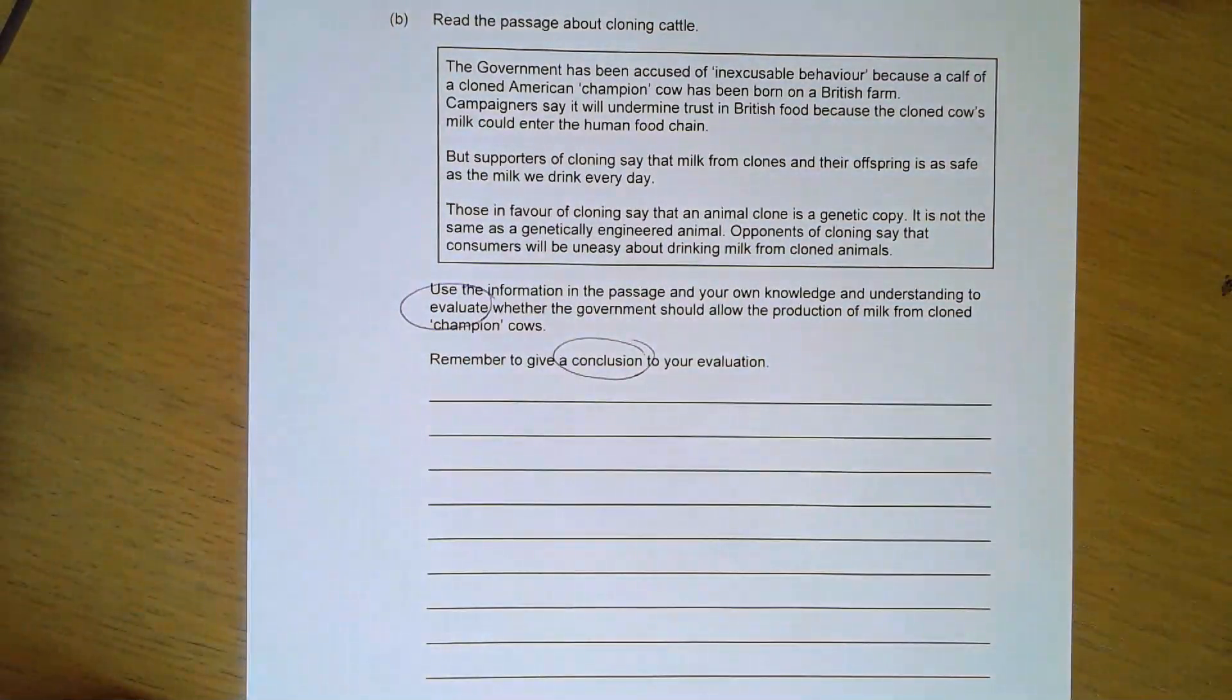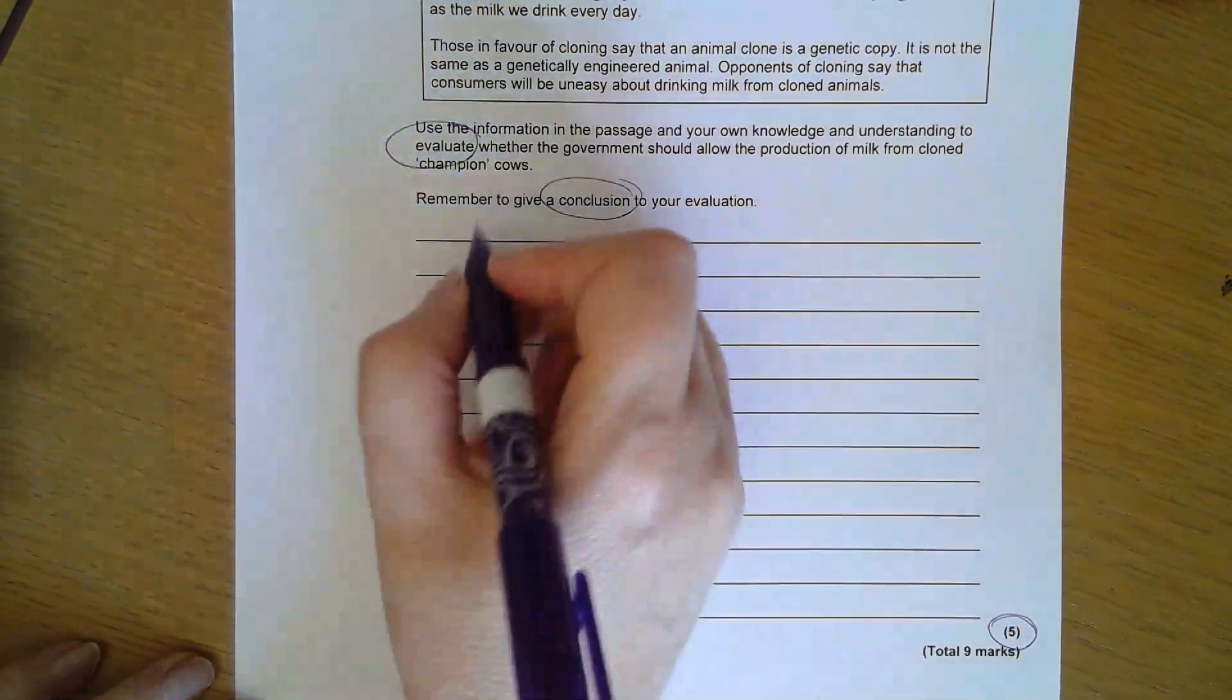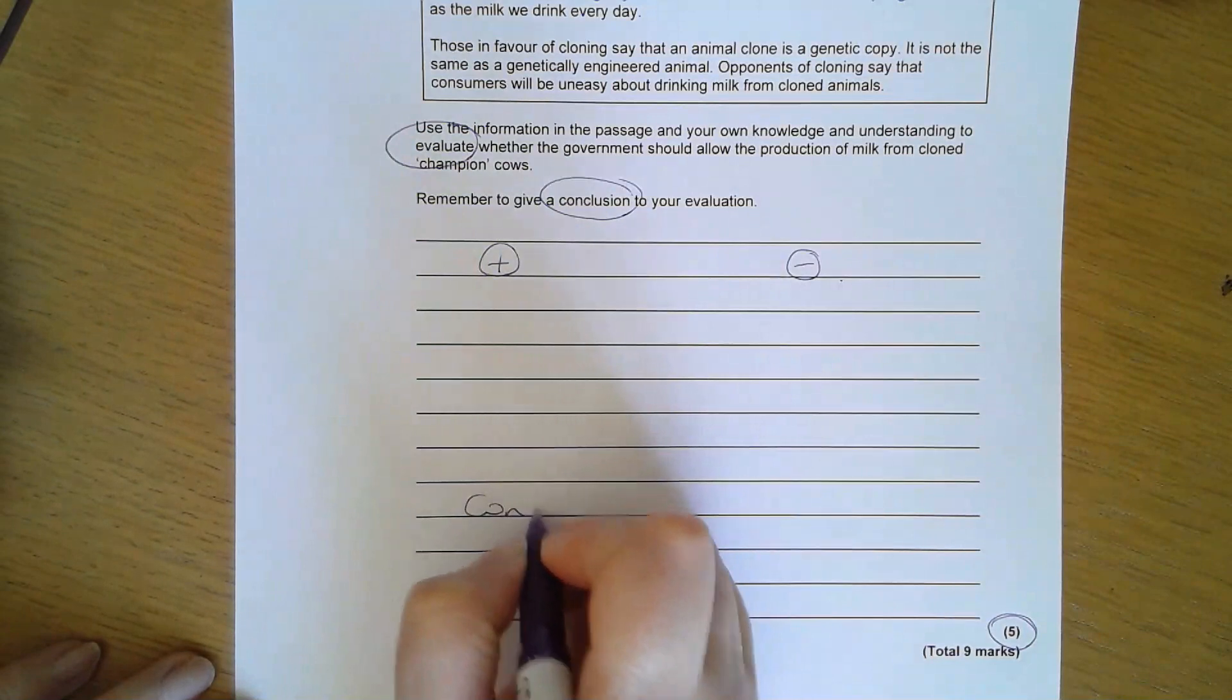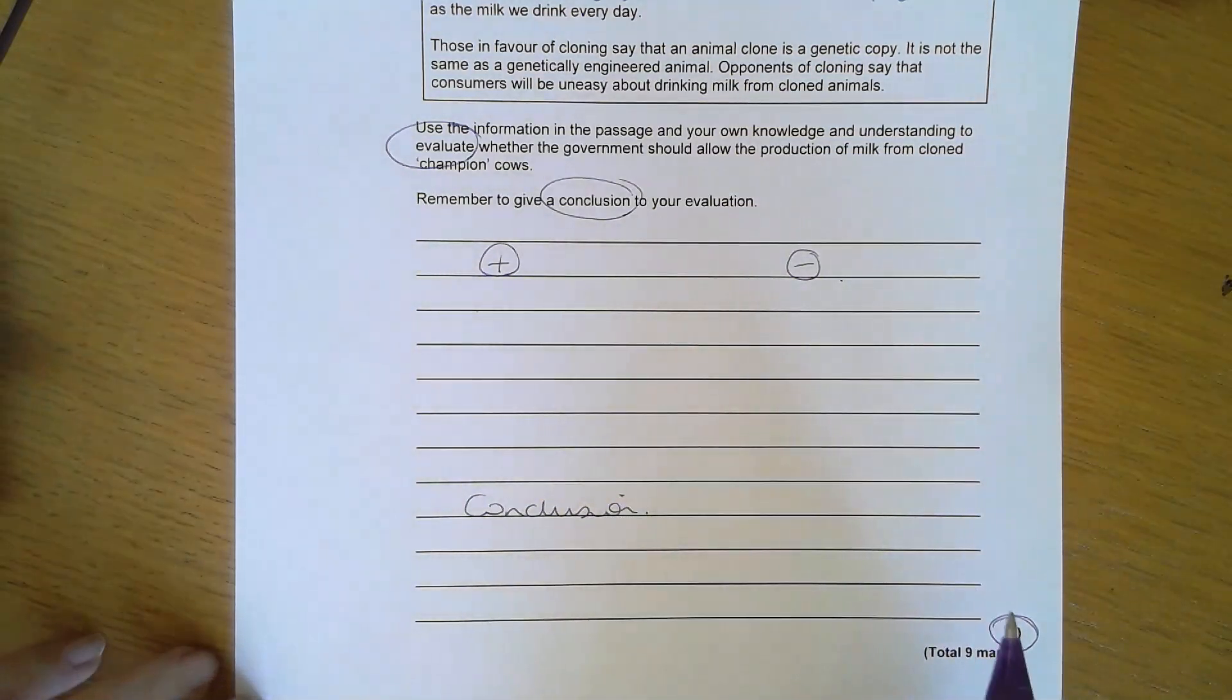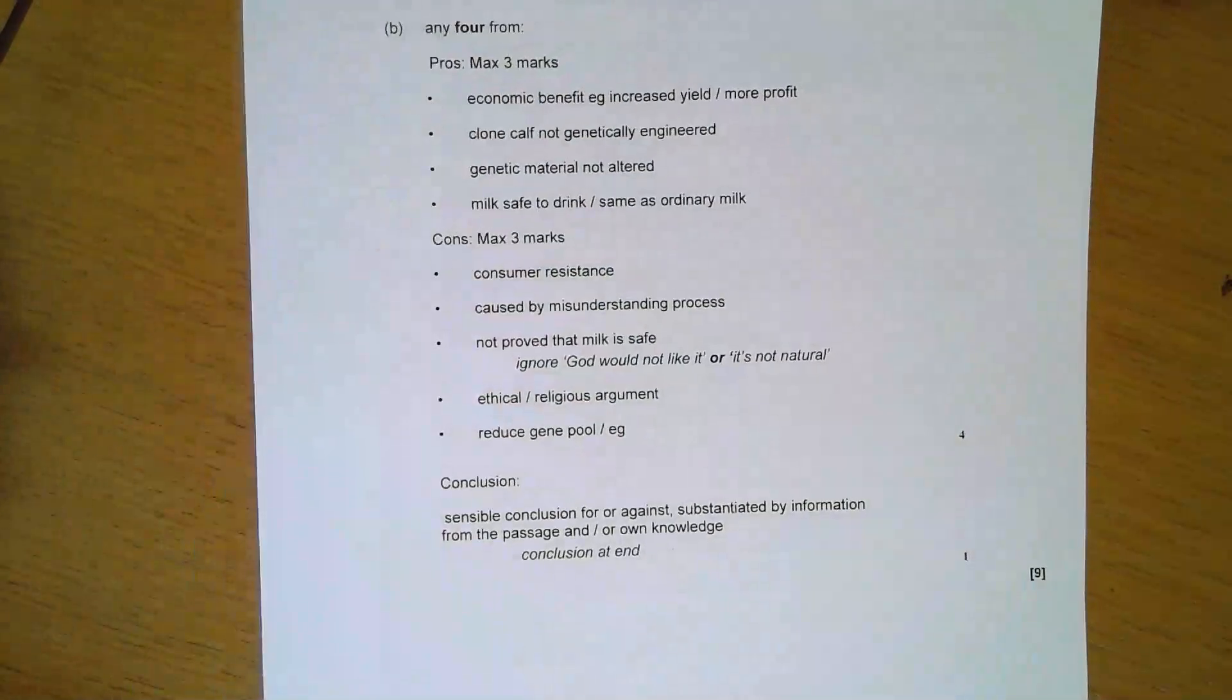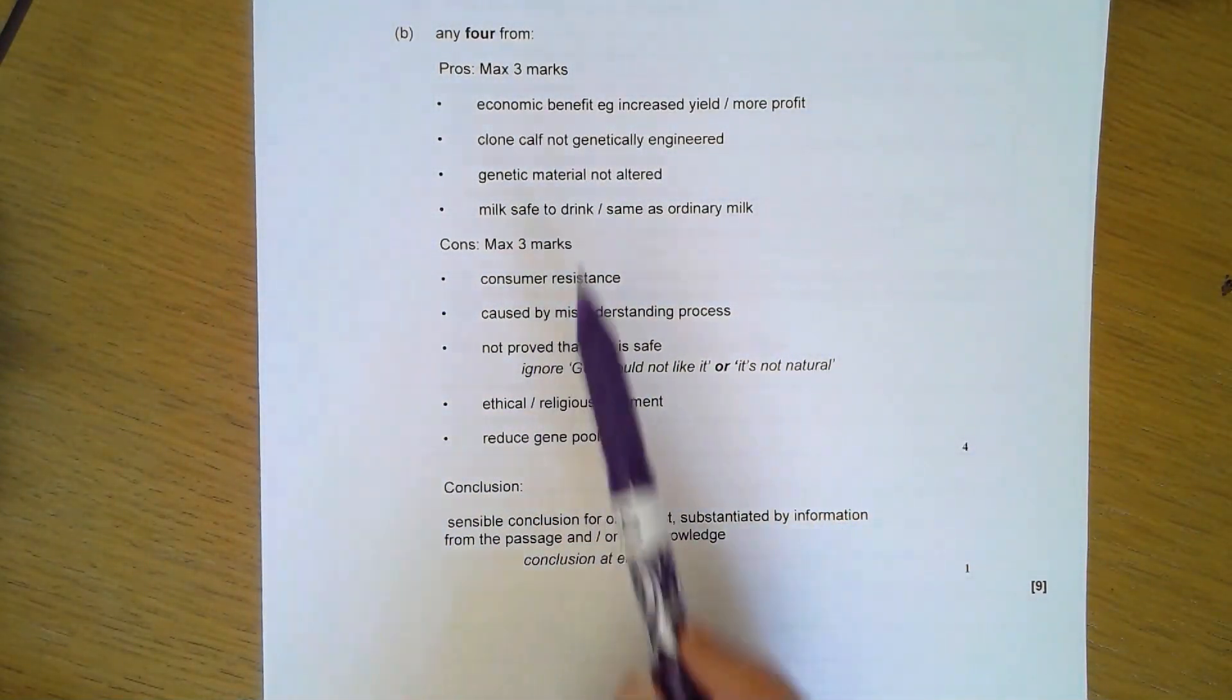If I'm evaluating, that's pros and cons, advantages and disadvantages. I've only got five marks here. I'm going to split it between pros and cons and then my conclusion. If I'm going to get five marks, I'm going to need four pros and cons. I could do three of one, one of the other, or two of each. I want four marks from the beginning bit and one mark for my conclusion. Probably the easiest way to show you this is just to put the mark scheme under.